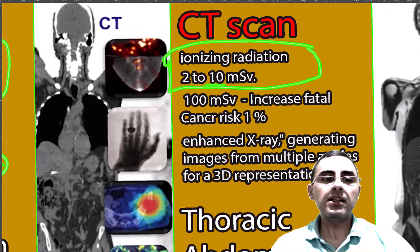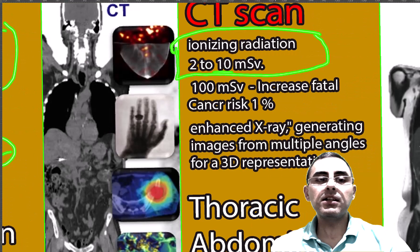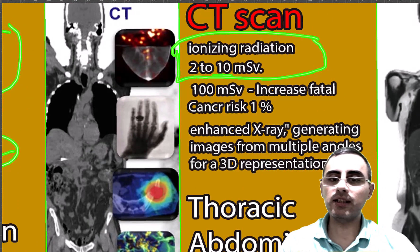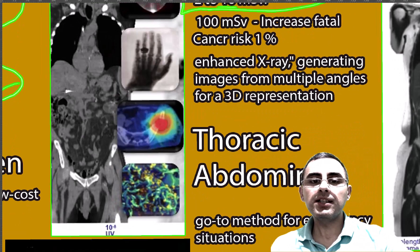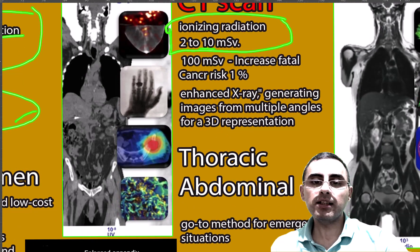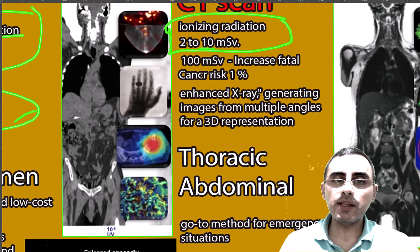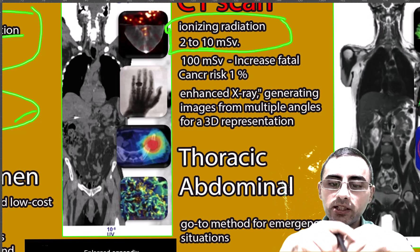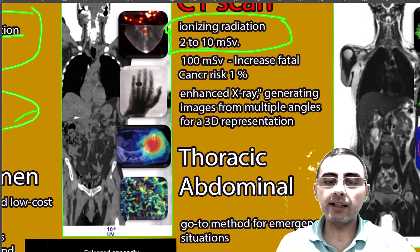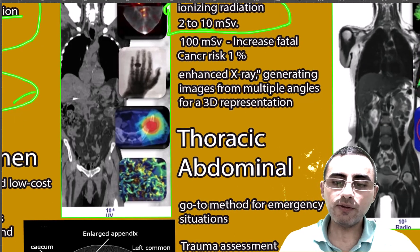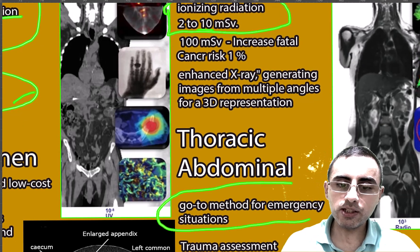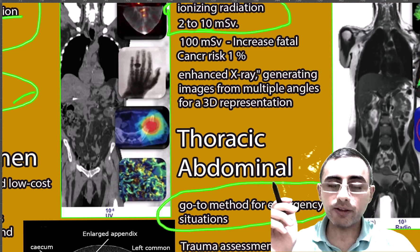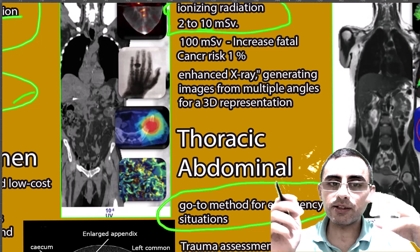CT scan is like combining many X-ray pictures together to get a 3D image. It is effective for the thoracic and abdominal cavity, sees almost everything in the body with good definition, and that's why it's the go-to method for emergency situations — it can visualize lungs, internal organs, gastric bowel, and blood vessels.